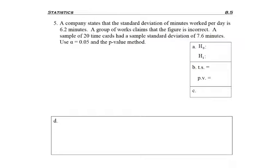So as I go back to the beginning, it says a company states that the standard deviation is 6.2 minutes. So off to the side, I'm going to write sigma equals 6.2. A group of workers claims the figure is incorrect. So incorrect means not the same, it's different, and so I have not equal to for the claim. So the claim is going to be H1.